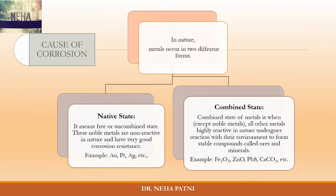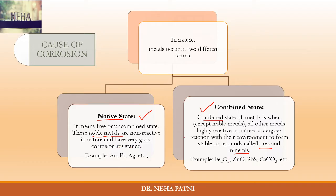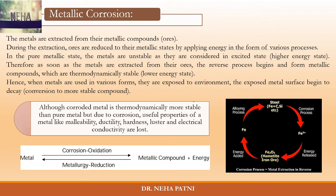Let us go ahead with the basics of how corrosion occurs, because metals occur in nature in two states. One type is native — that means they are free and in an uncombined state. Normally noble metals are found like this; they are non-reactive. But there are certain metals which are highly reactive, and since they are highly reactive they are always found in a combined state. They react with the environment and form either ore or mineral.